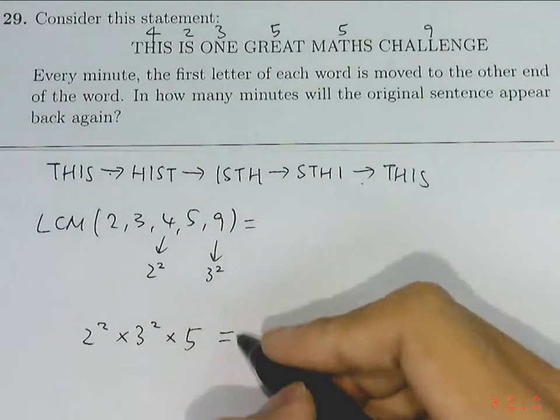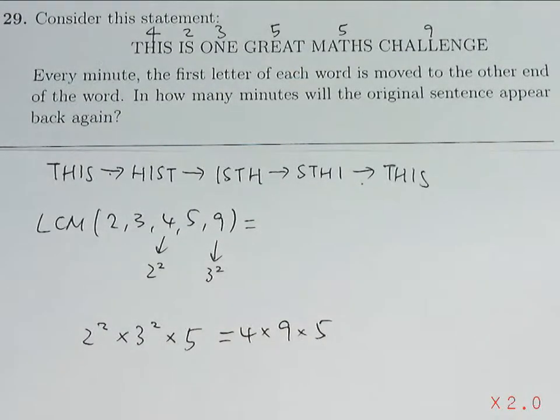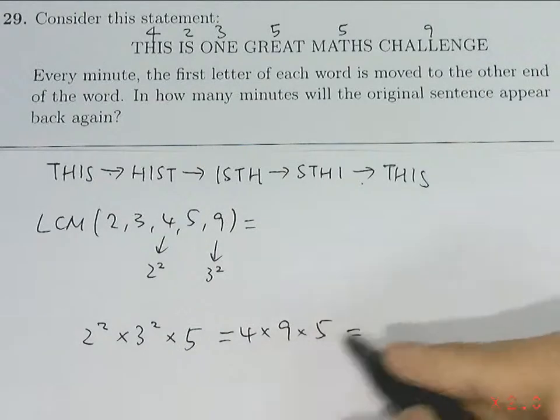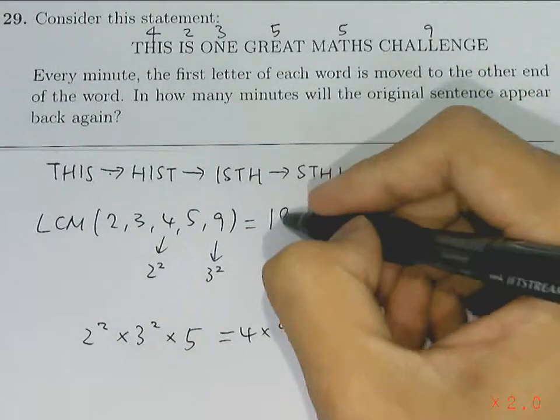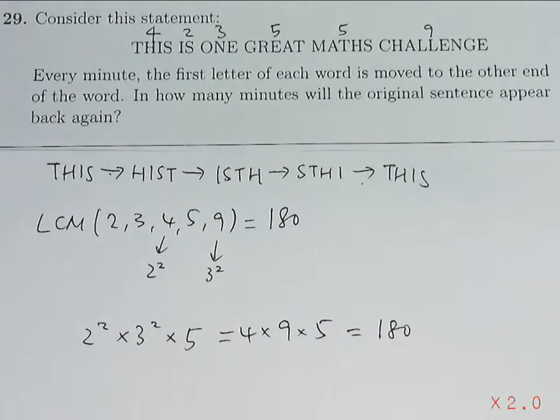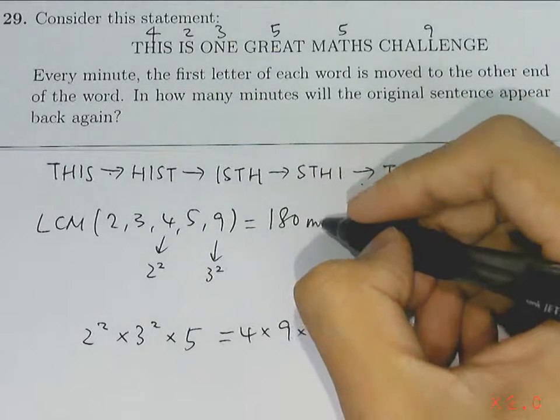Which is 4, multiplying by 9, multiplying by 5. Giving us 180. So our LCM will be 180. Which is also our answer. Which will be 180 minutes.